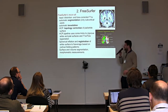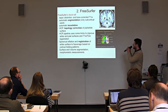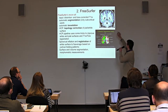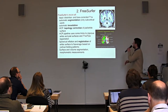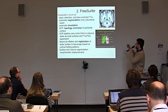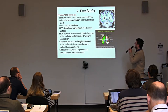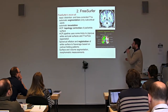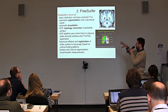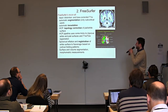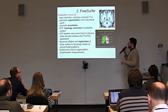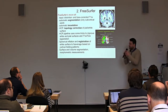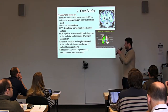FreeSurfer produces very nice surface extractions: the pial surface in blue, the white matter–gray matter interface in green, and a third surface midway between the two. Normally this works very well; improvements were made by adding information from the T2-weighted images. FreeSurfer then inflates the extracted surfaces and registers them on a sphere — spherical registration.